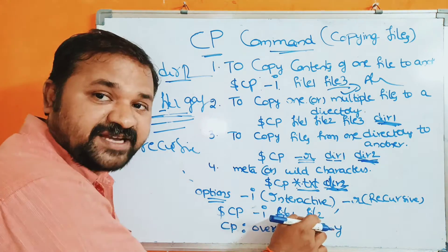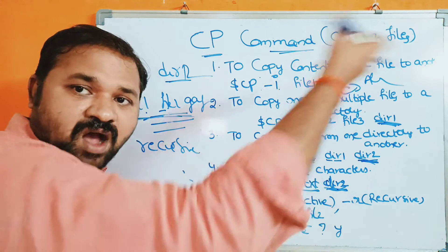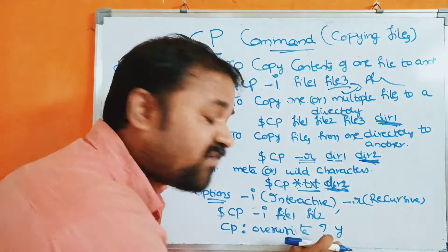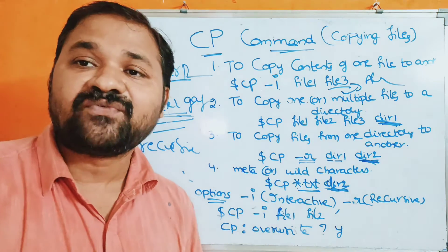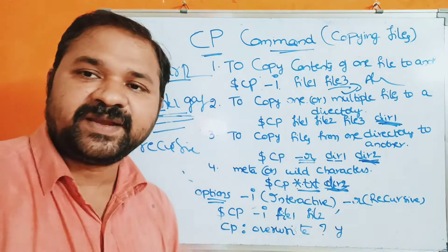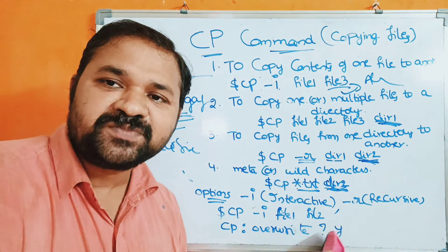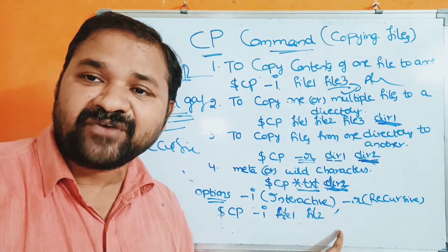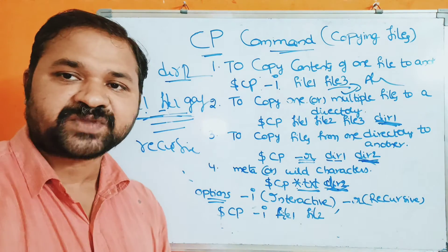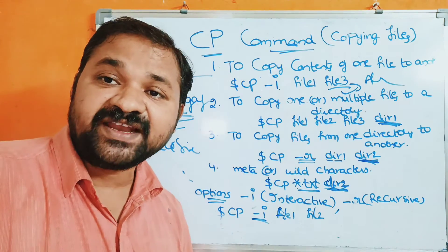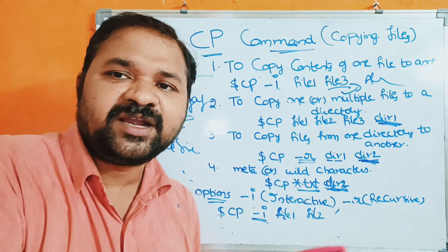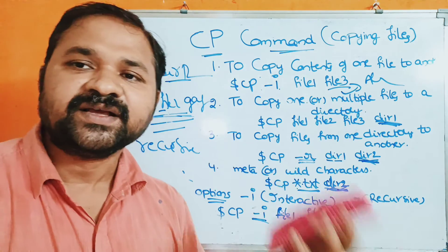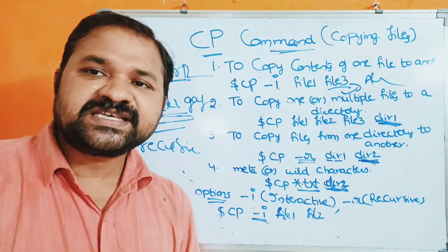When using cp -i and the destination file already exists, a message will be printed asking 'Overwrite?' If you press 'y', overwriting will be done and the contents of file1 will be copied to the destination. If you press anything other than 'y', no copying will be done. However, if the destination file is a new file, this message will not appear — since there is nothing to overwrite, file1's content will simply be copied to the new file. Use the -i option when the destination file might already exist and you want to confirm before overwriting.